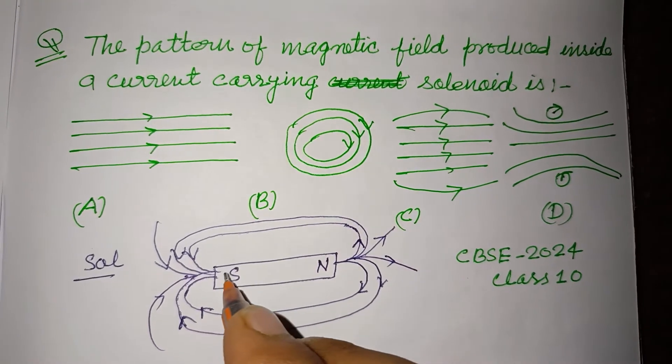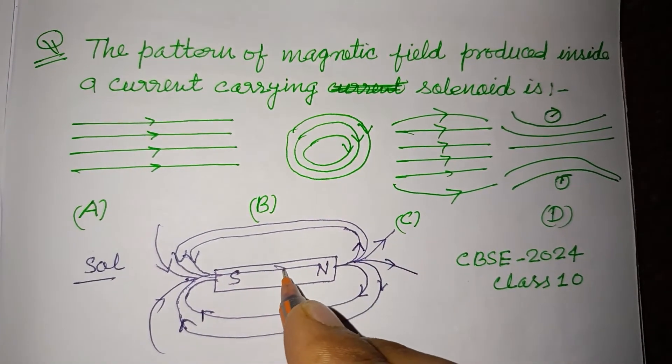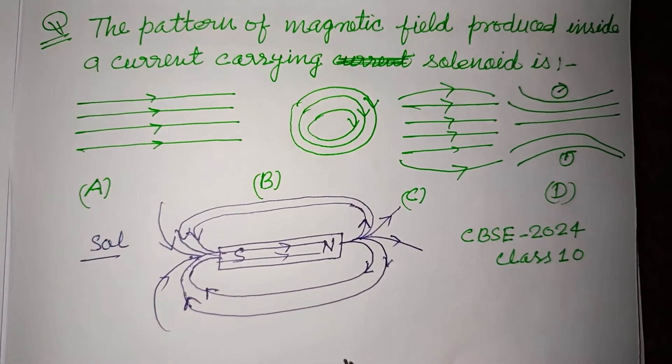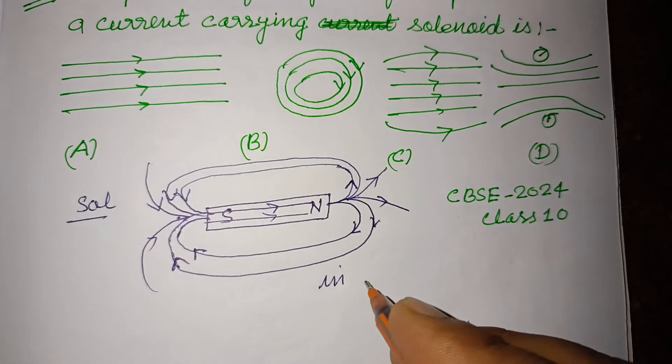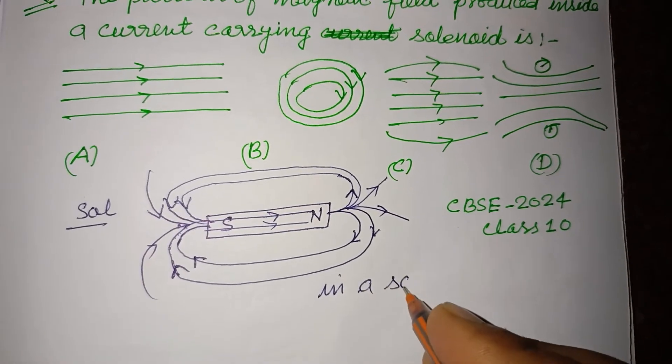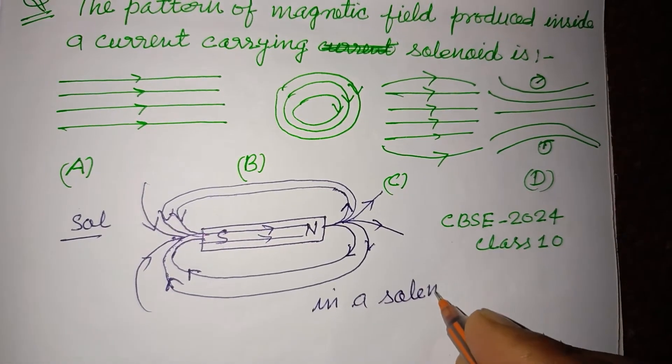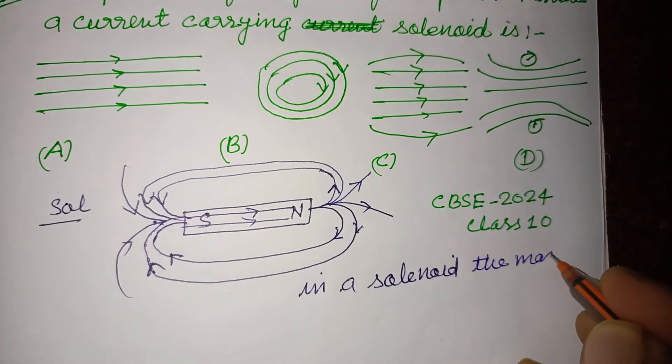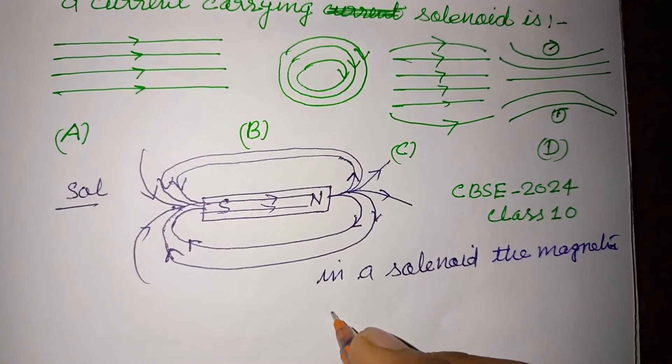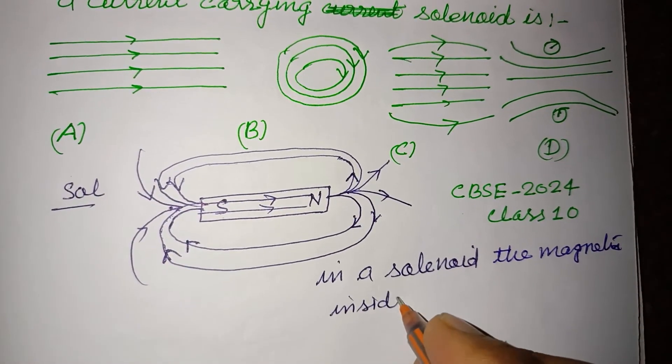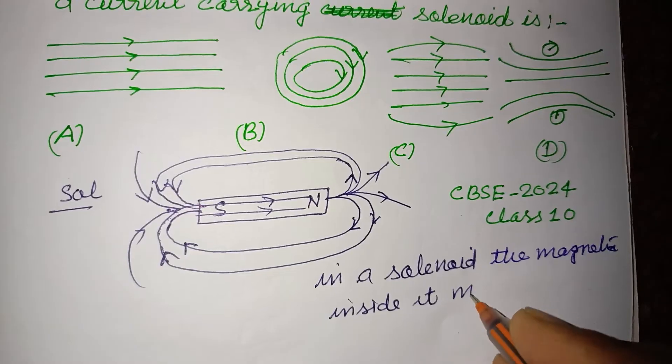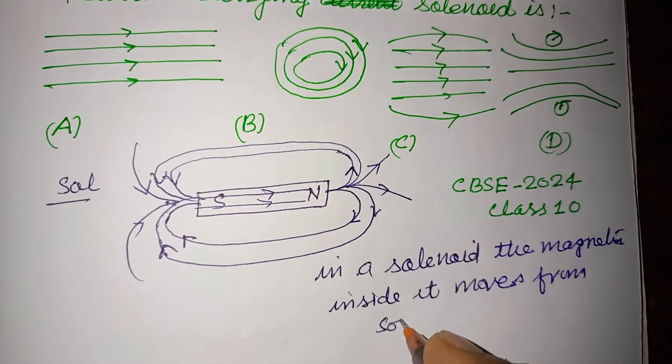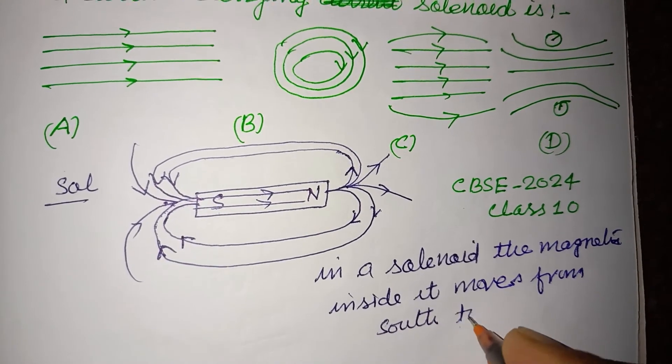Inside the magnet, the magnetic lines move from south to north direction. Similarly, in a solenoid, the magnetic lines inside it move from south to north direction.